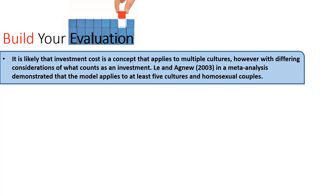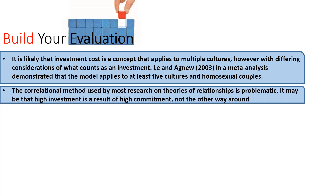Another issue is the correlational method used in most of these theories. Of course, there isn't much option but to use correlational research because you can't place people into a relationship on an experimental method. But what it could mean is that high investment is actually a result of high commitment, not the other way around. It might be that you feel strongly committed to an individual so you decide to put more of your time, money, and risk into the relationship — not that high investment results in high commitment.